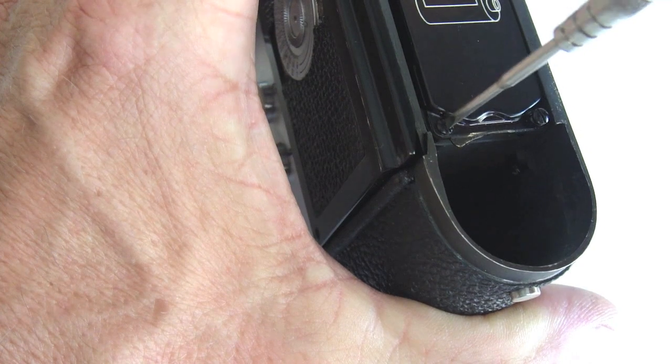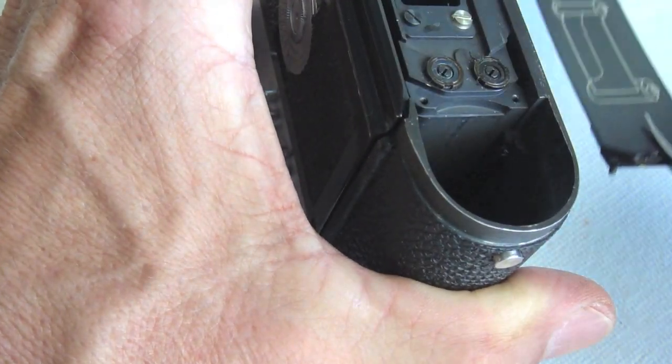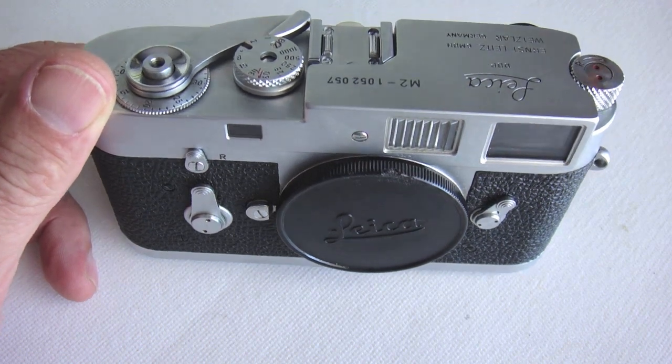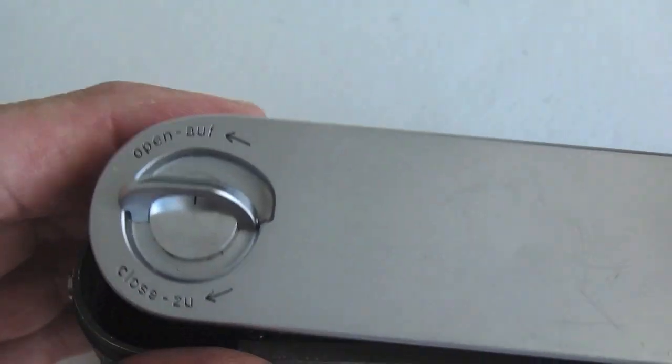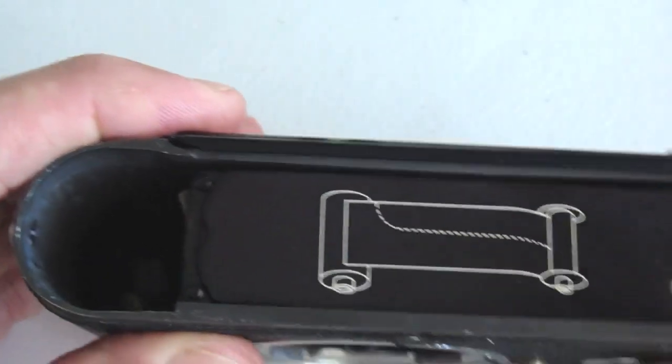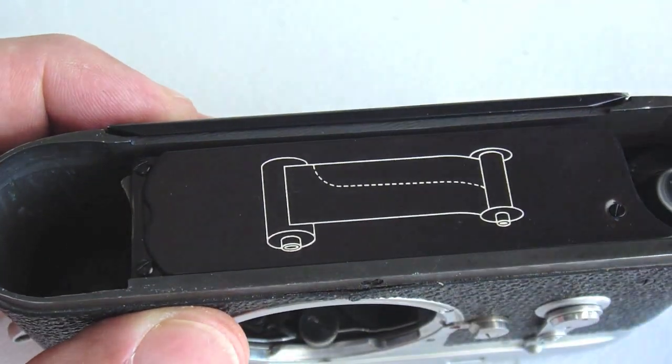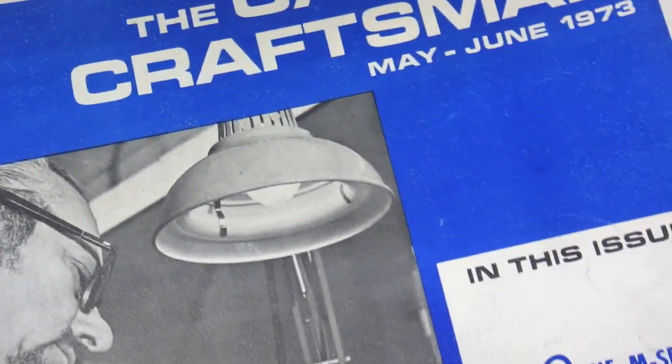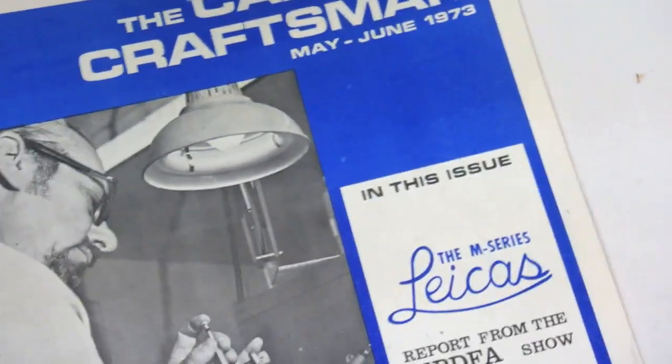The bottom cover procedure shown here on this M2 is from another Fixed Old Camera video. The shutter curtain tension adjustment procedure that will now be outlined was discovered in the Camera Craftsman May-June 1973 issue.